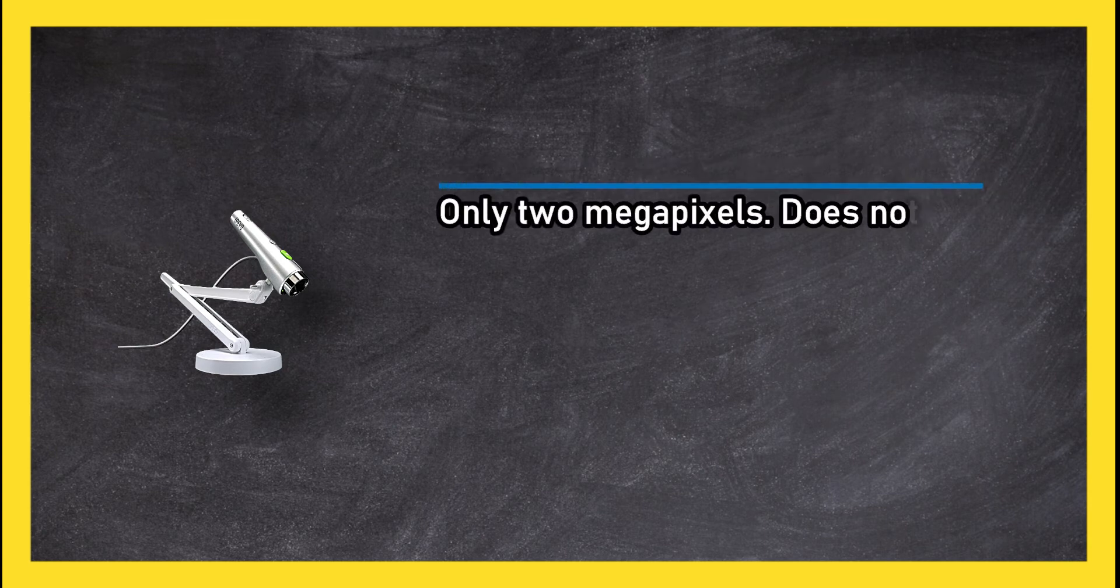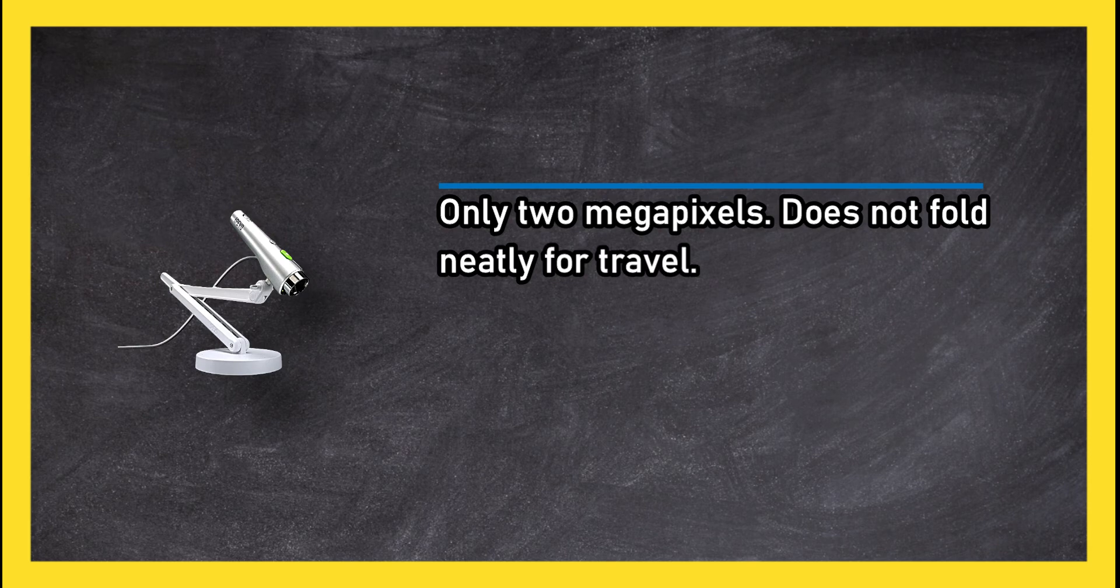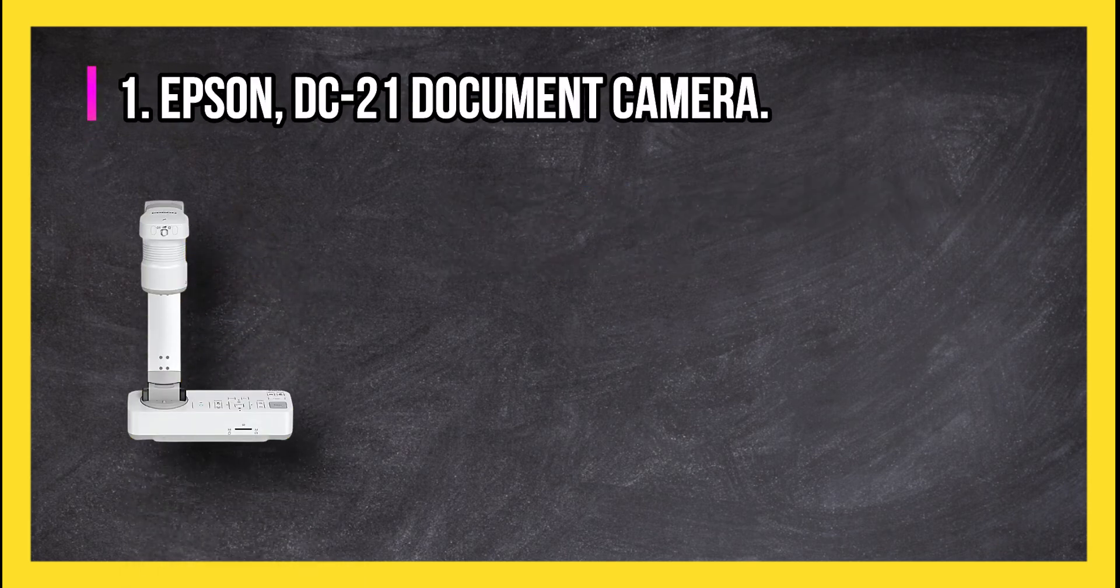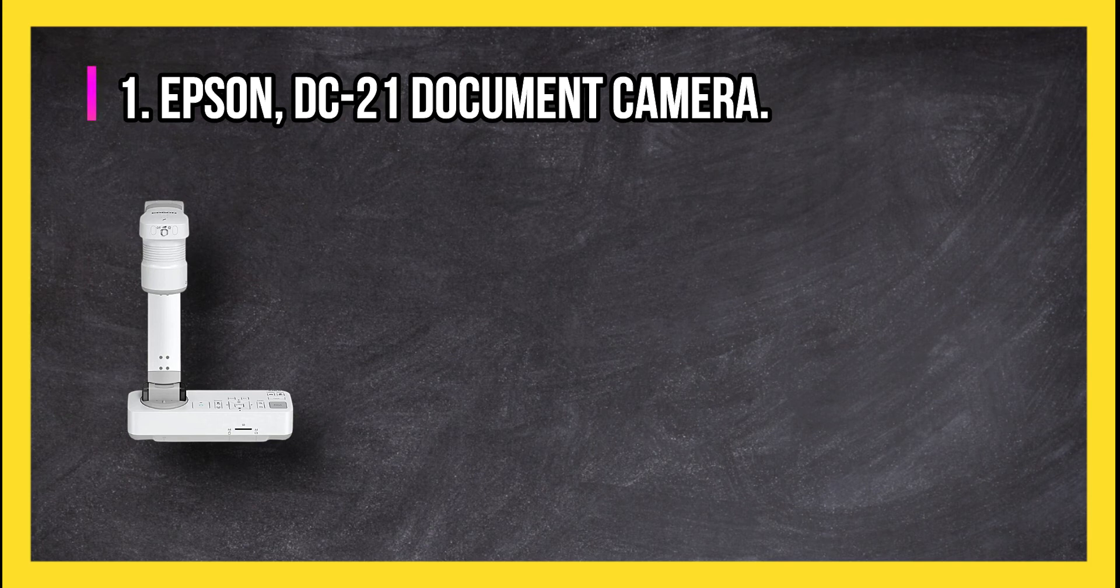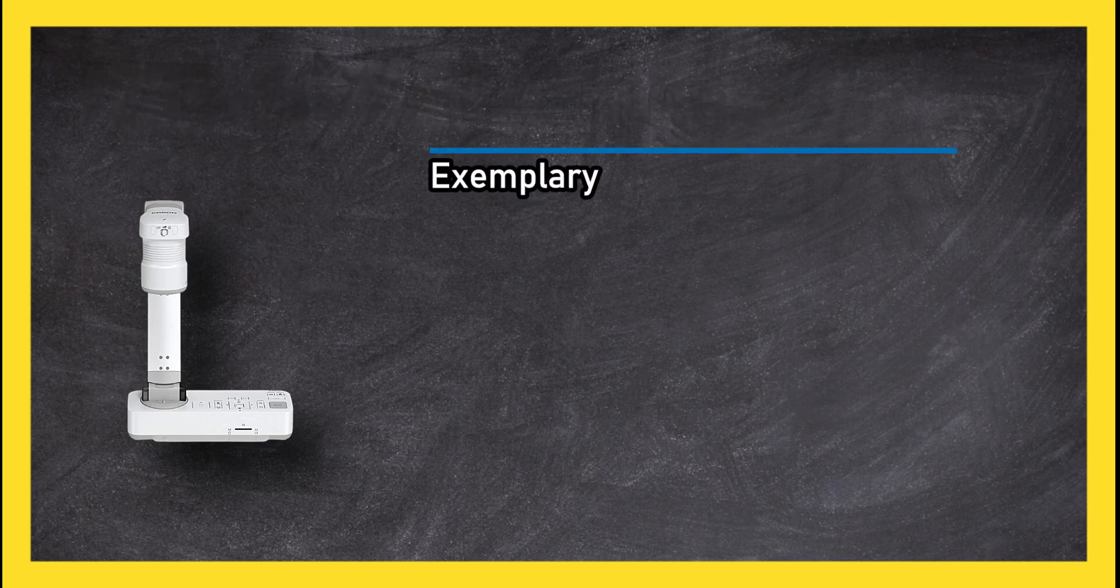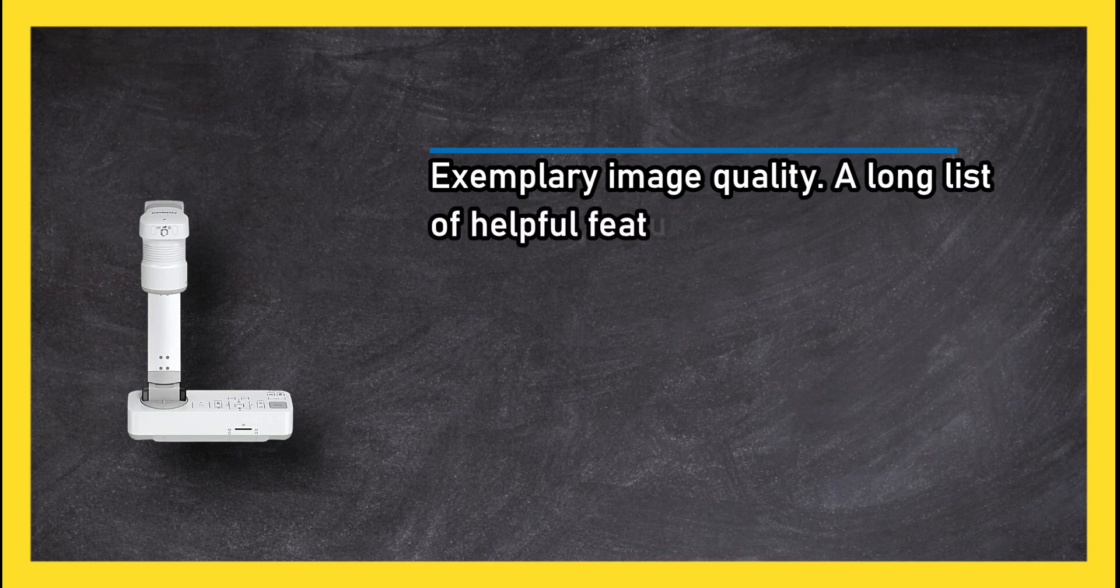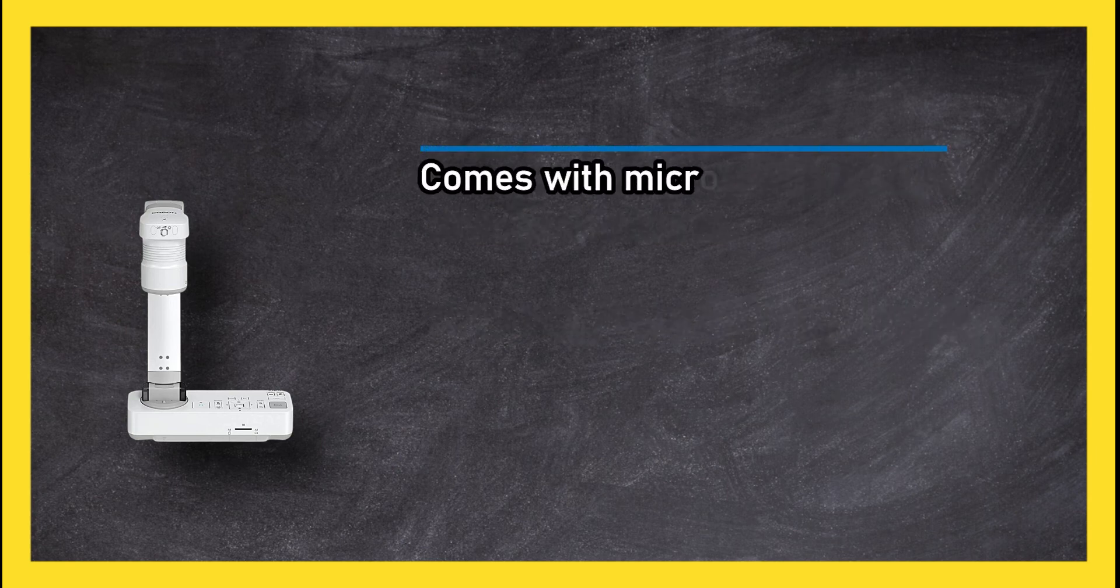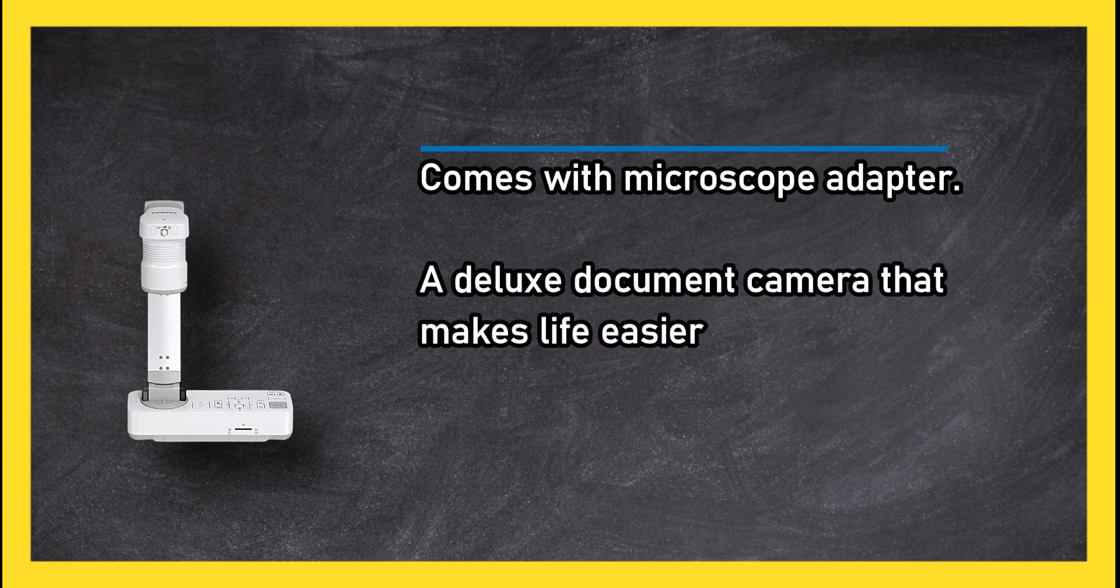At number one: Epson DC 21 document camera. Exemplary image quality, a long list of helpful features, 1080p resolution, HDMI connectivity, comes with microscope adapter. A deluxe document camera that makes life easier for professionals. Expensive to buy.